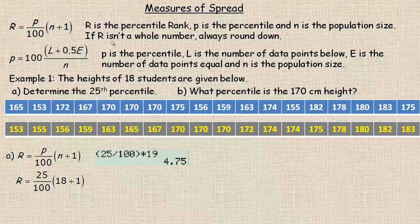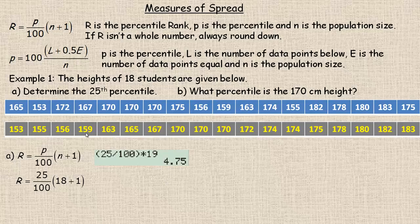Since R is not a whole number, we always round down. If R were a whole number — say 7 — we would just look at the 7th number in the ordered list. But since it's 4.75, we take the 4th number and the 5th number and average them. Counting along, the 4th number from the bottom is 159 and the 5th number is 163.